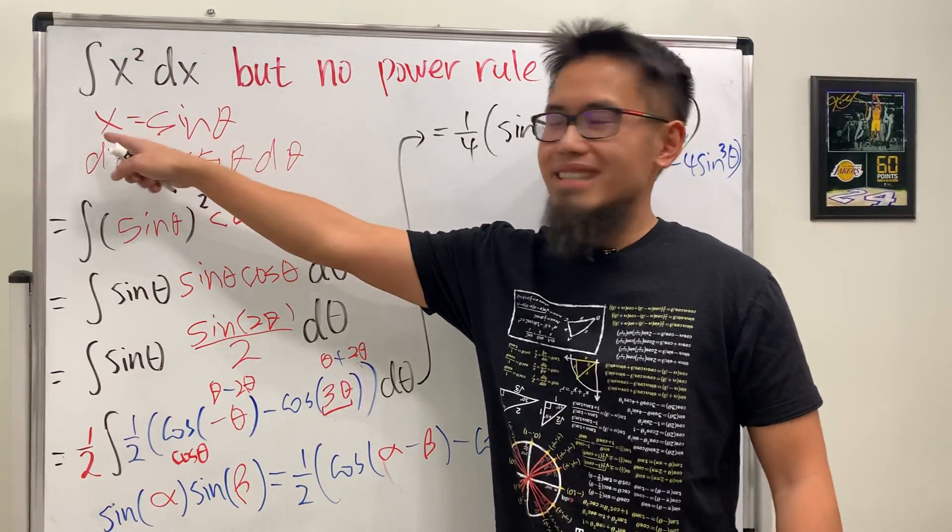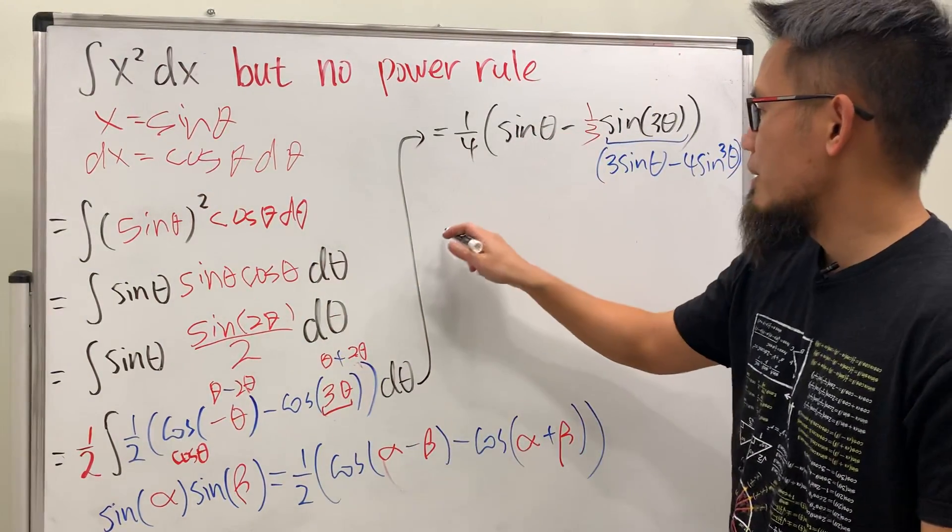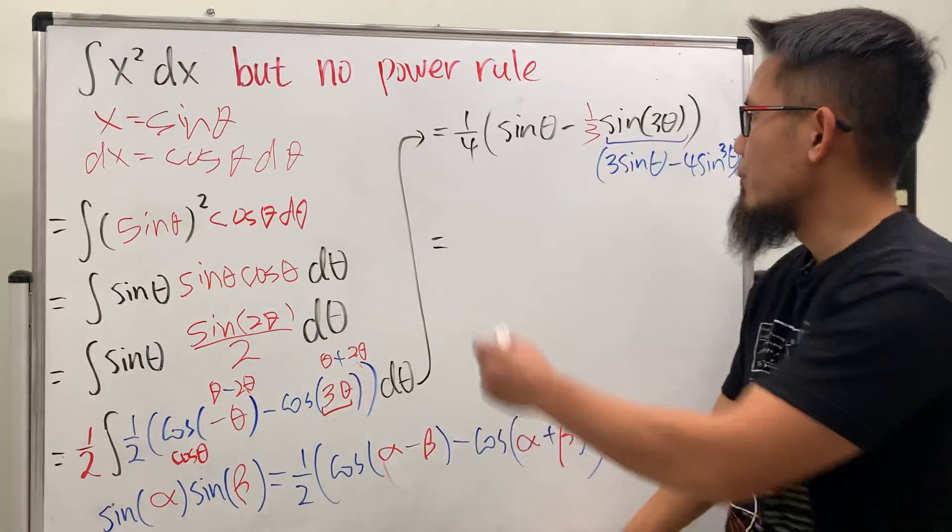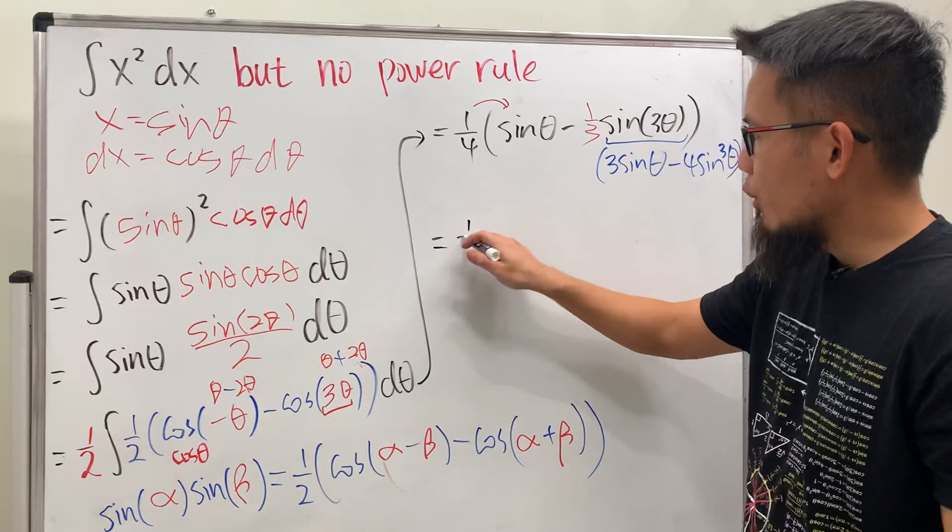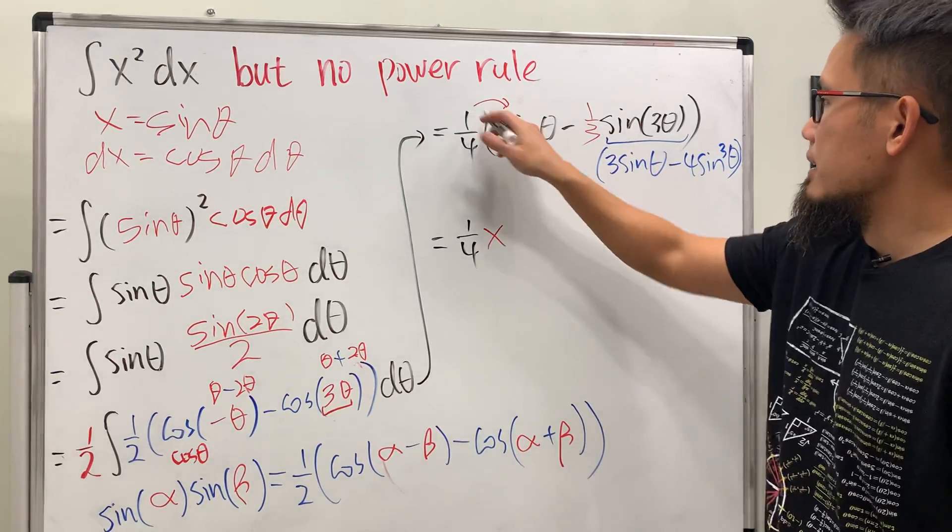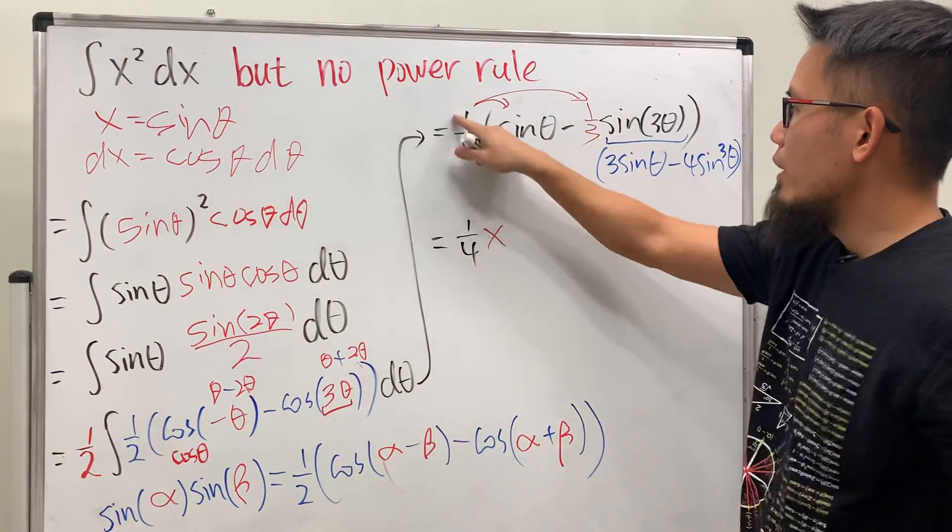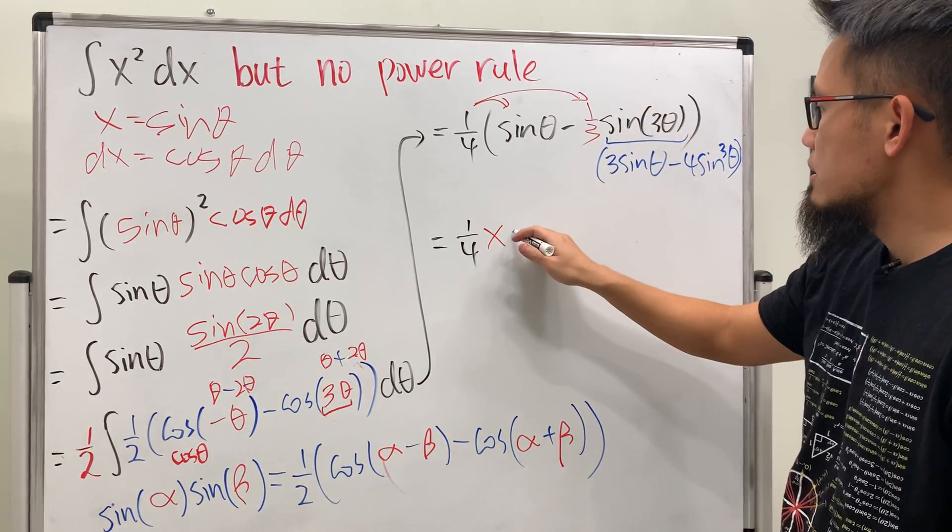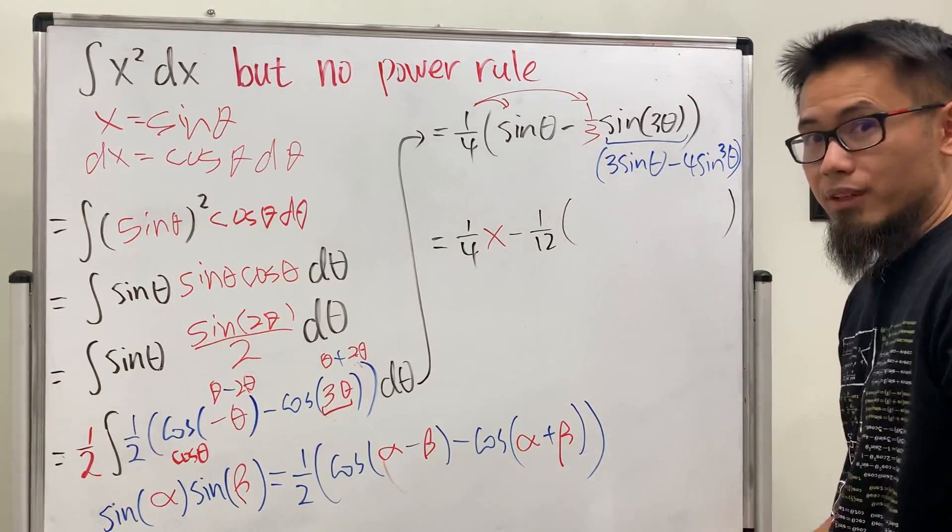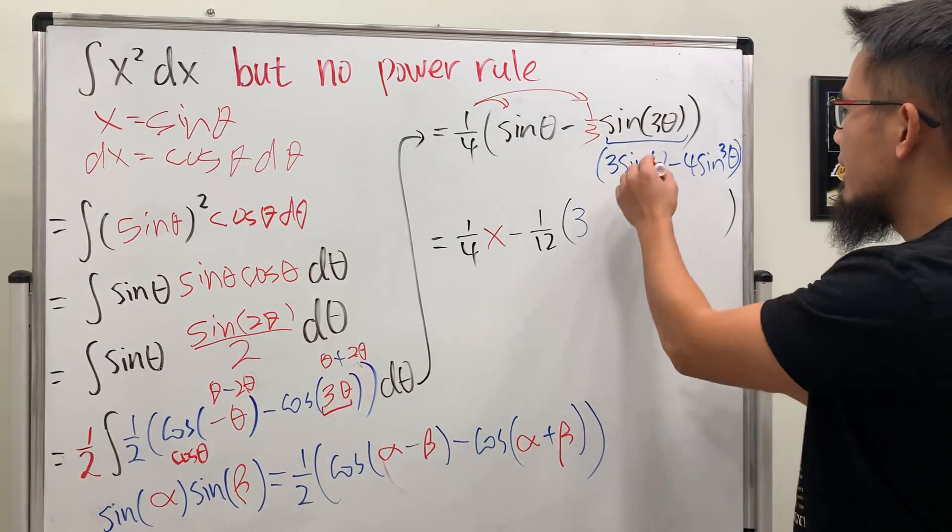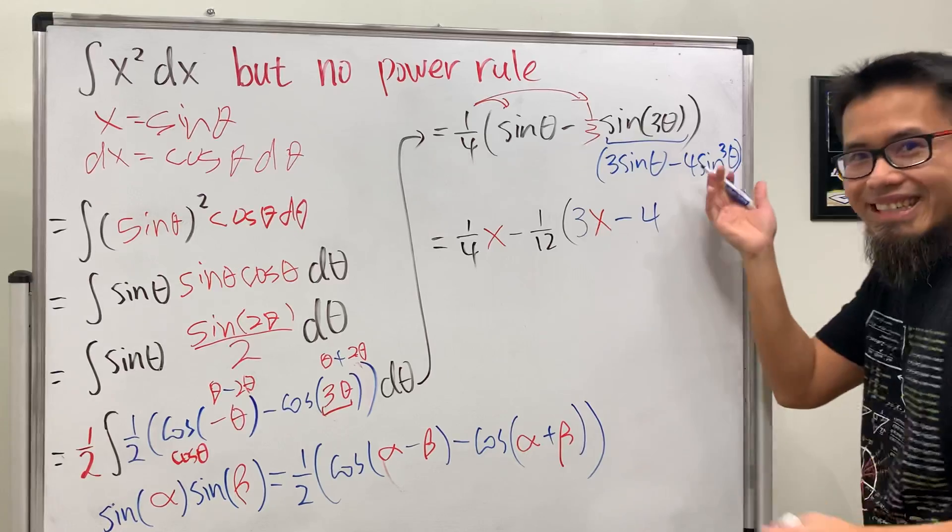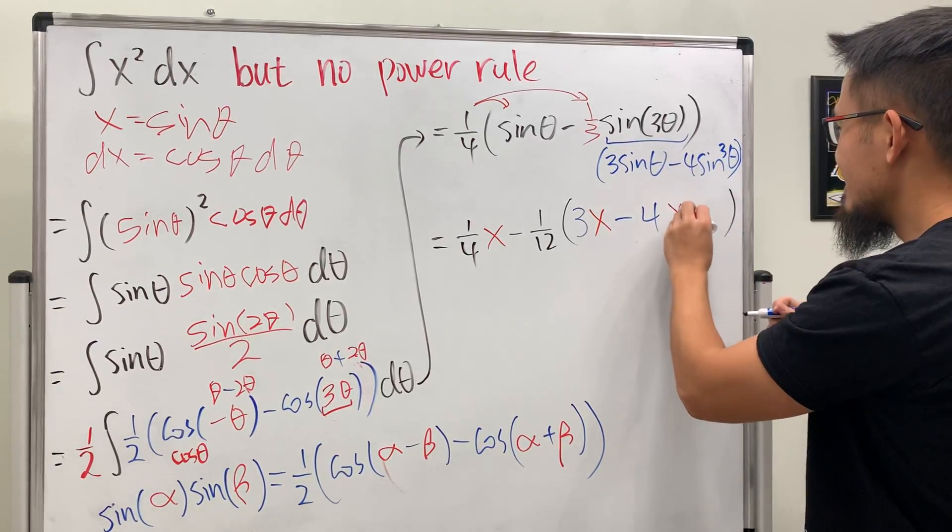Sine of 3 theta is equal to 3 sine theta minus 4 sine to the third power theta. So this right here is equal to 3 sine theta minus 4 sine cubed theta. Guess what? X is exactly our sine theta. So here, this right here, we have 1 over 4. This right here is 1 over 4 times that, which is 1 over 4. And sine theta is x. Next, this times that. Well, 1 over 4 times 1 over 3 is minus 1 over 12. And then let's go ahead and put this down. Here we have 3, and then sine theta is x. And then minus, here we have 4, and then sine theta is x to the third power. So we have x to the third power.